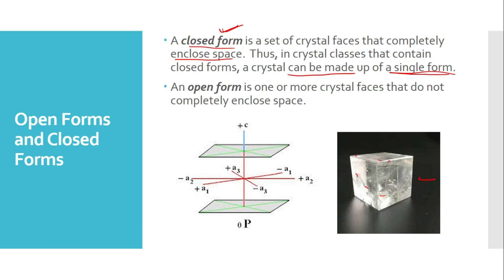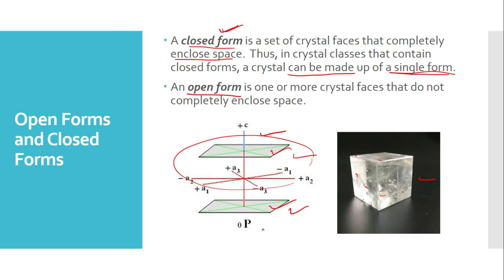An open form is the opposite: the faces present are not able to completely enclose the space. For example, a pinacoid has only two faces, which are not enough to enclose all space, so it is an open form. Pinacoids, prisms, and pyramids are examples of open forms. Where a crystal cannot enclose the whole space, that is an open form; where it can, that is a closed form.